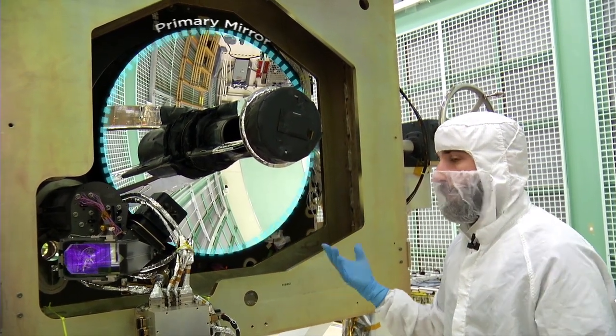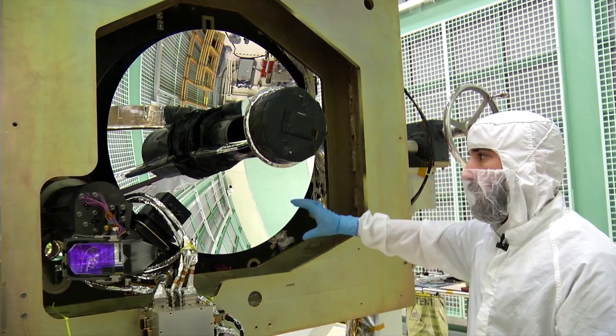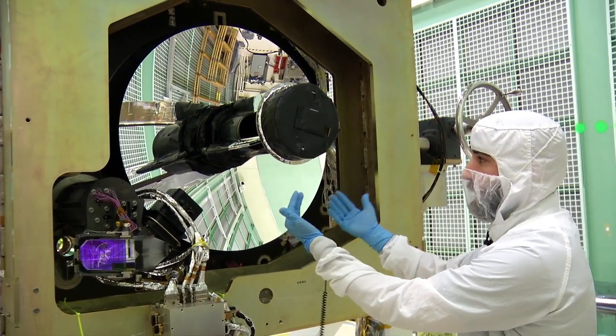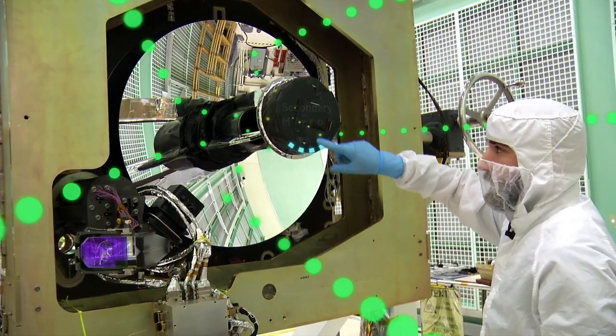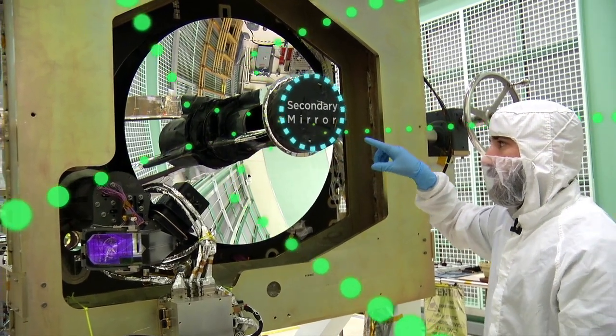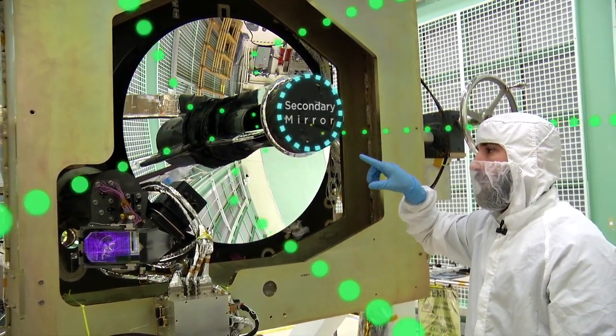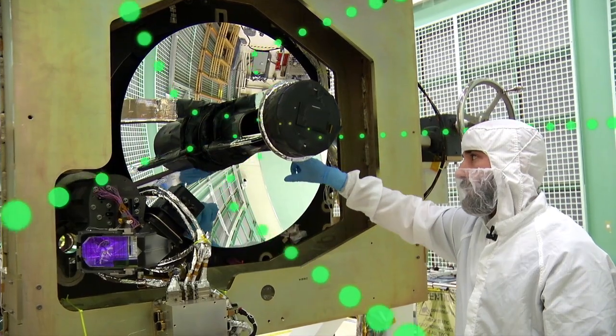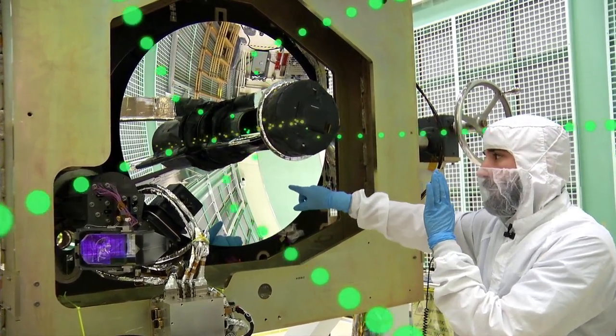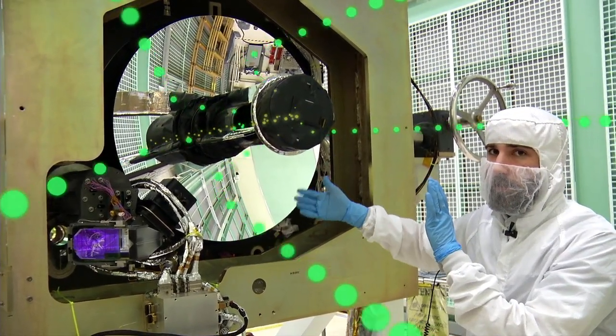The way that it works is light goes into the primary dish and is collected by this big dish, and it gets focused up into the secondary mirror, which is at the end of this tower. And then the secondary mirror shines the light and focuses it down through that tube to the center, to the back of the telescope, where the detectors are.